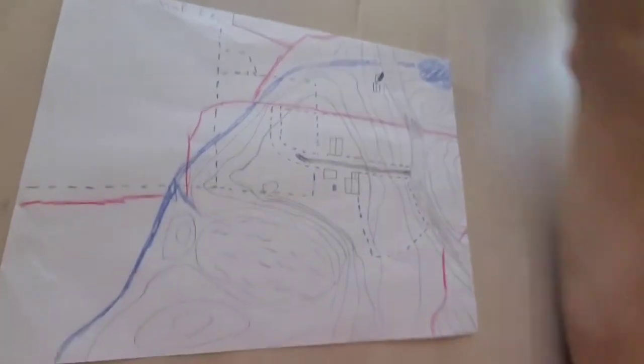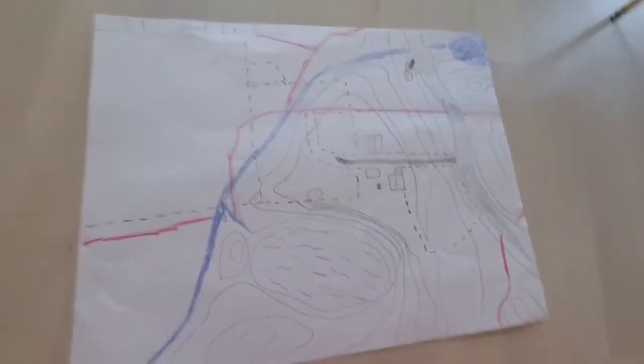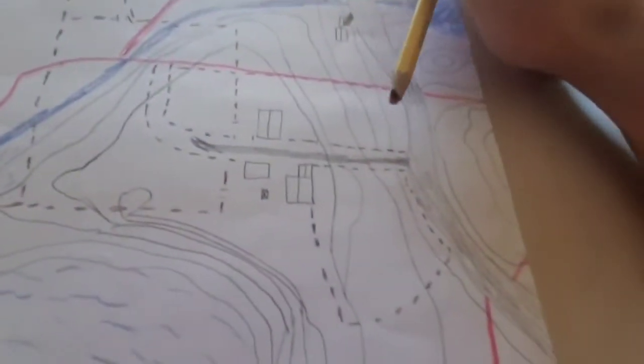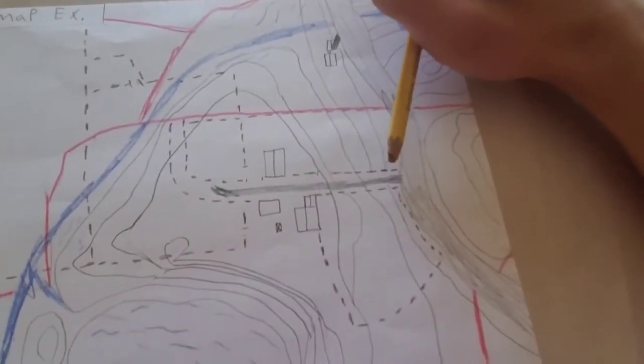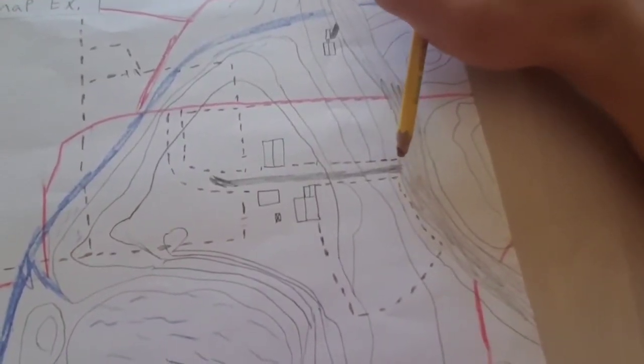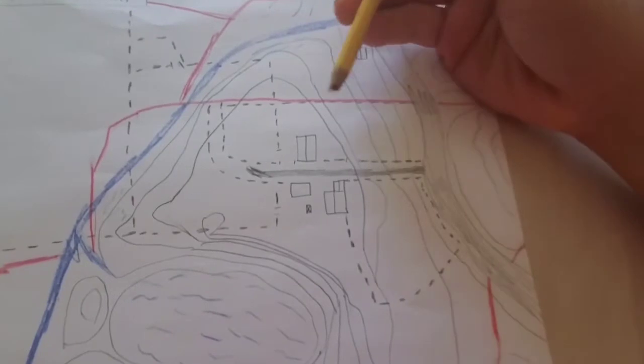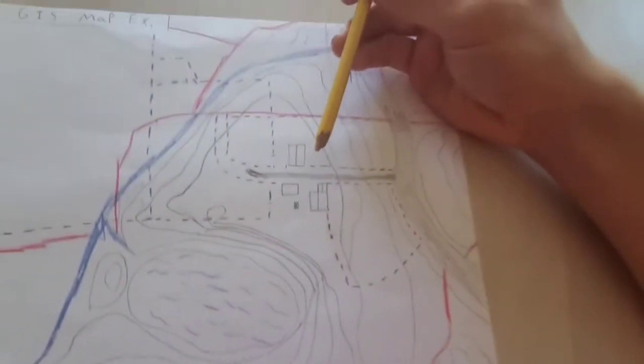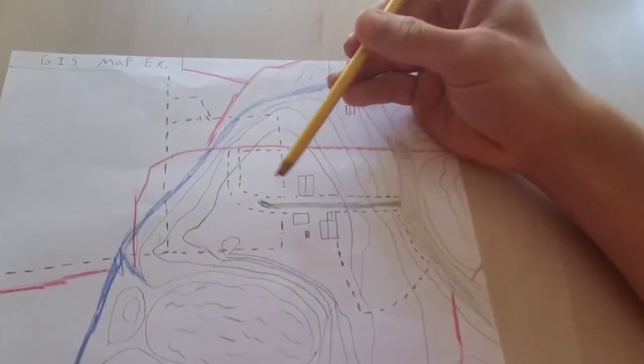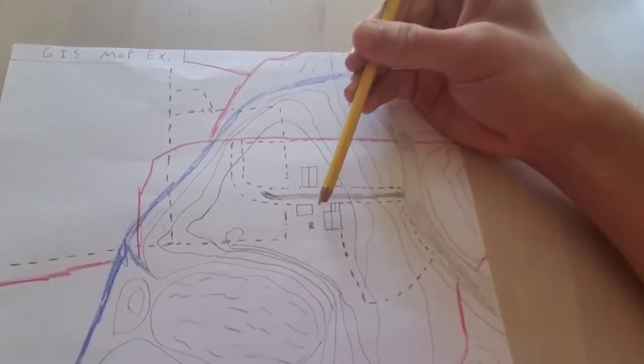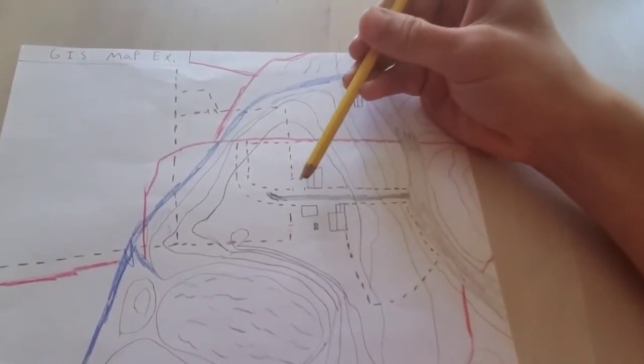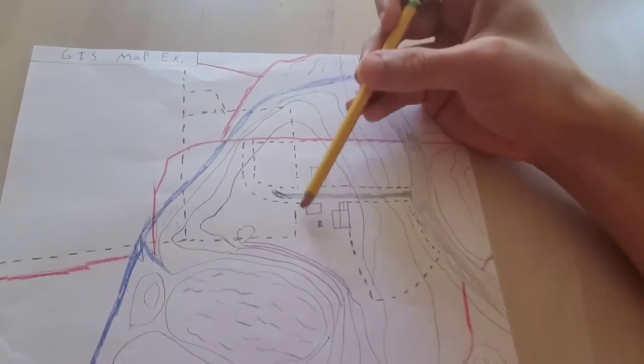I made a mock-up map here. We'll start with a GIS map, like a typical one. This was a farm back in the 1800s. The house is right here, the barns right here, outbuildings.